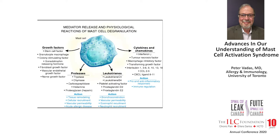For example, leukotriene C4, B4, and D2 and prostaglandin E2 are so-called lipid mediators. A drug called montelukast will block the action of leukotrienes at the level of their receptor, and aspirin will block the synthesis of prostaglandins.